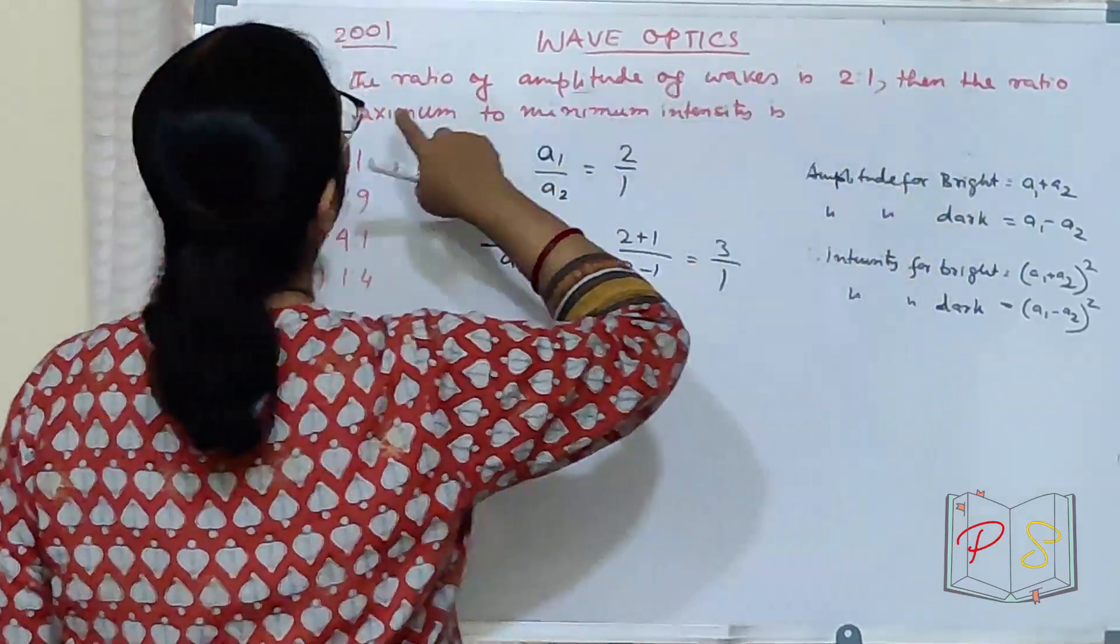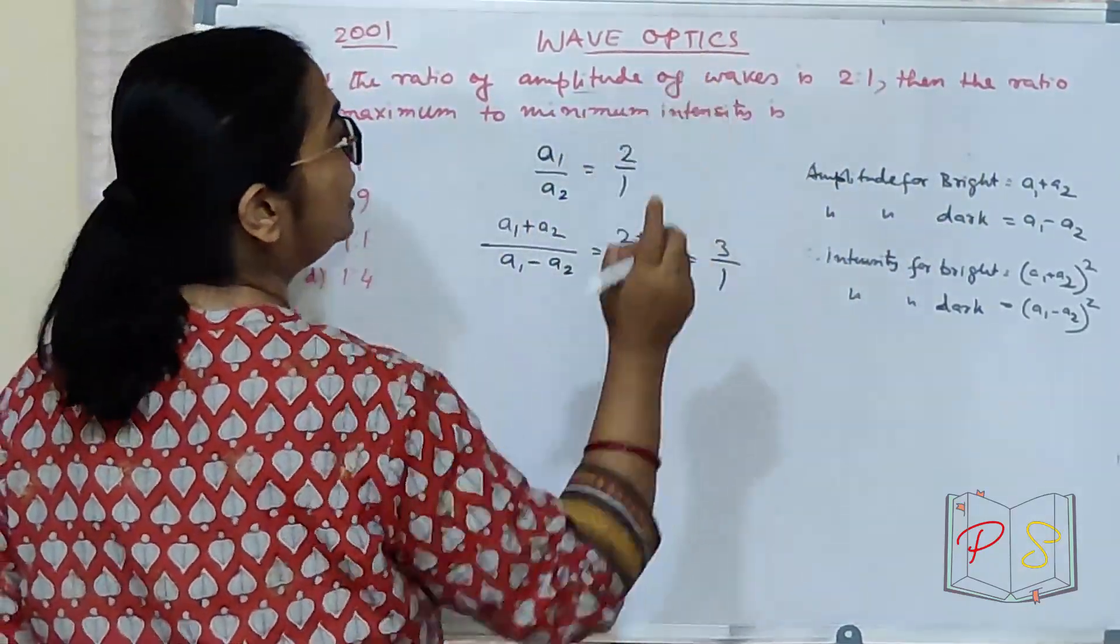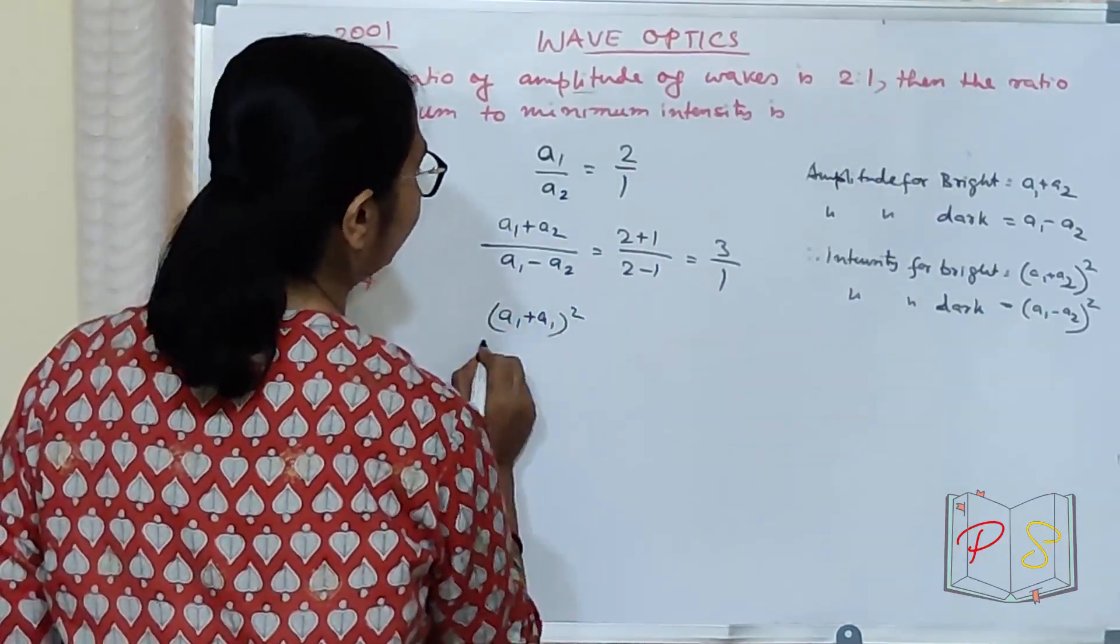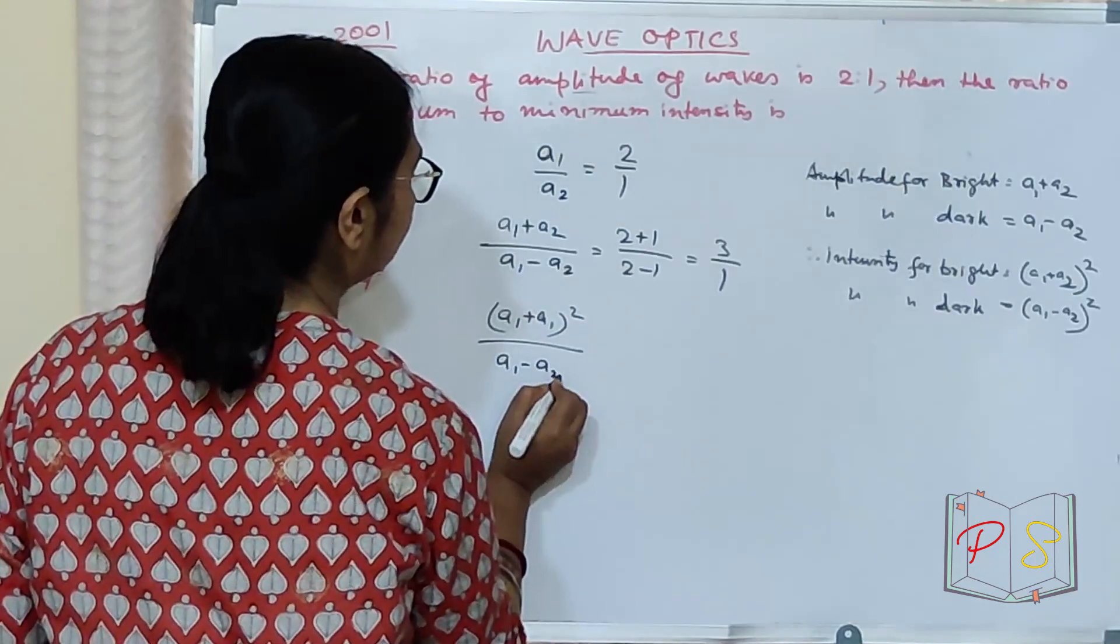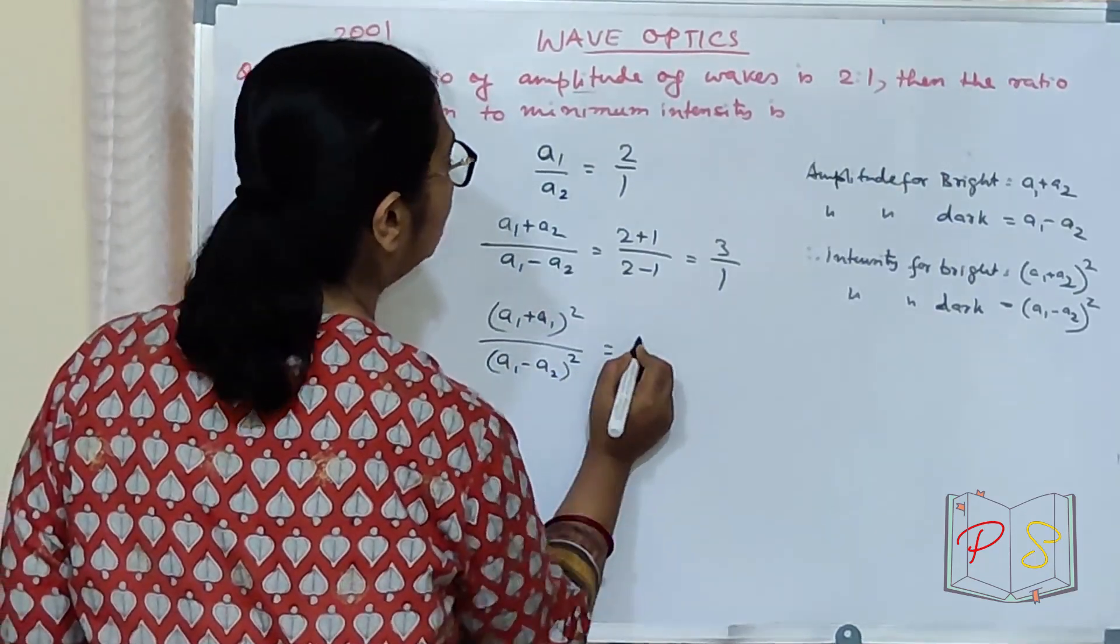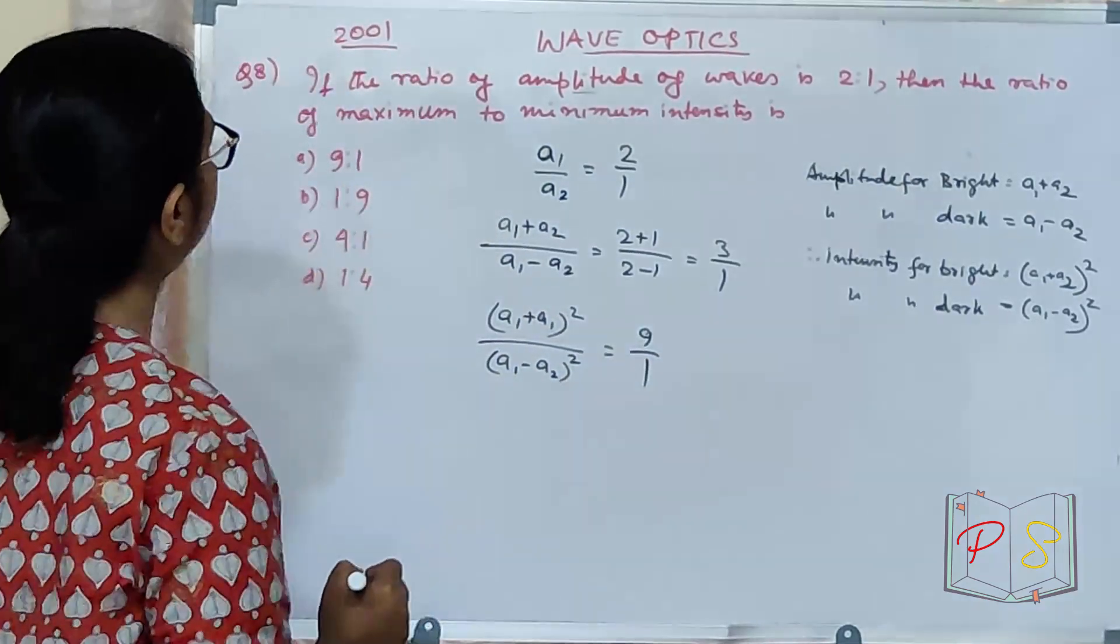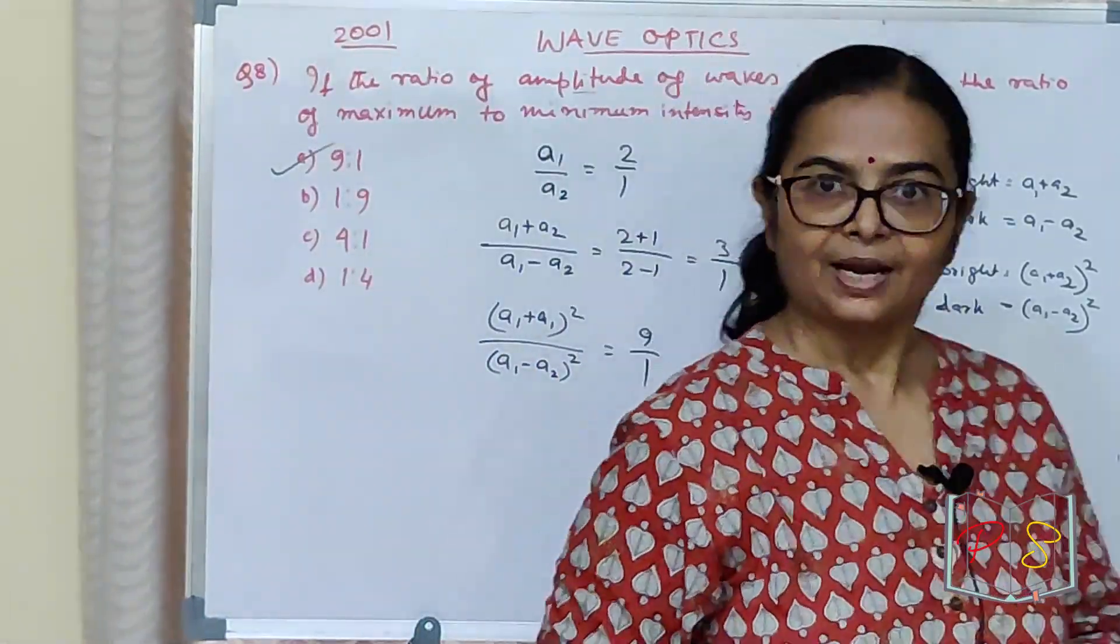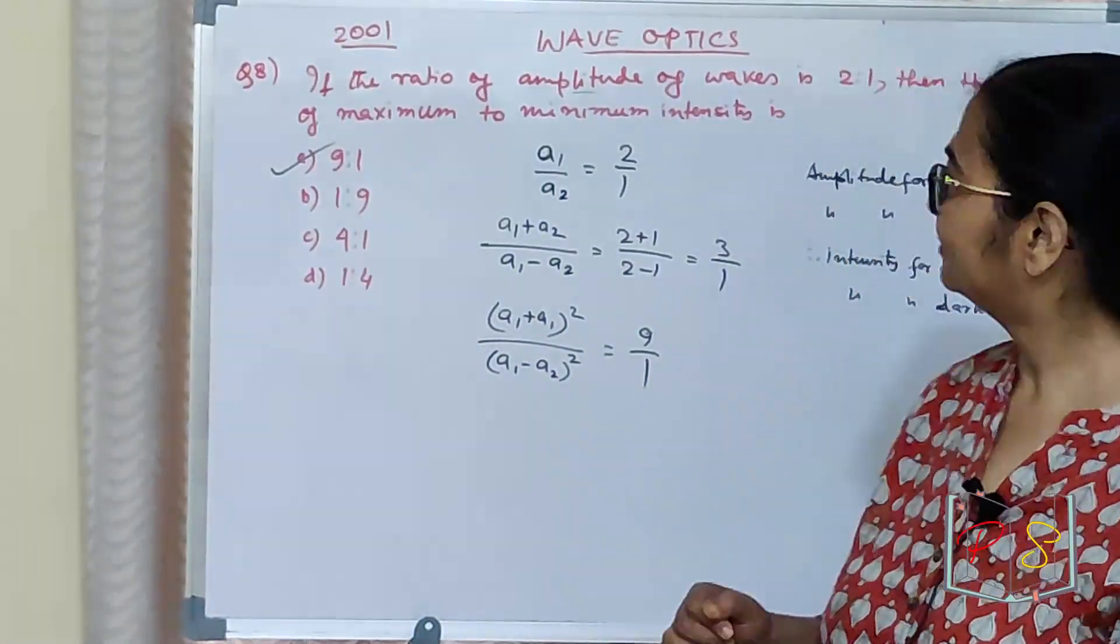Then the ratio of maximum and minimum intensity, we need square. So, A1 plus A2 ka whole square divided by A1 minus A2 ka whole square equal to 9 upon 1. 9 upon 1 is your correct option. Clear?